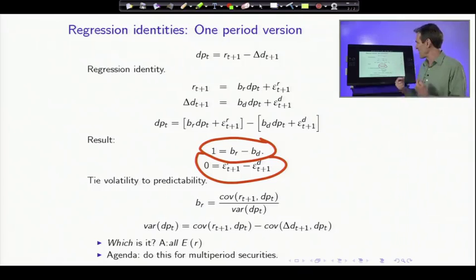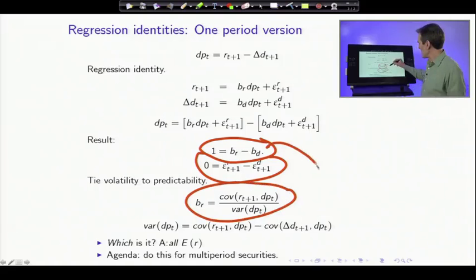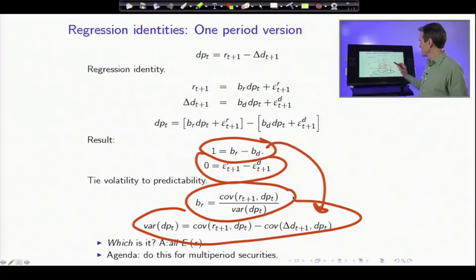The other big fact we saw was volatility. Well, this also tells us, this first identity tells us about volatility as well. Because a regression coefficient is the ratio of covariance to variance. So take that equation, the top equation, multiply both sides by the variance of dividend yields.